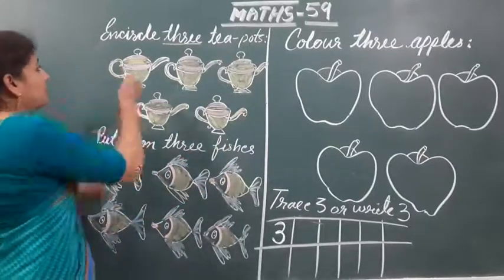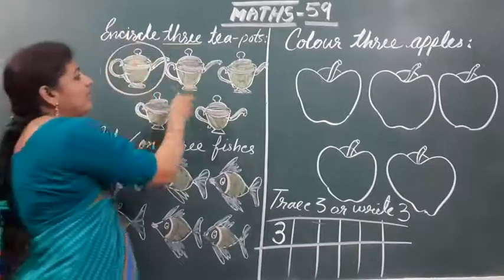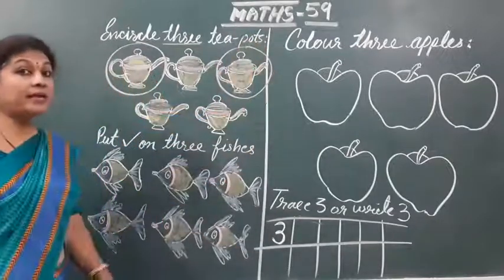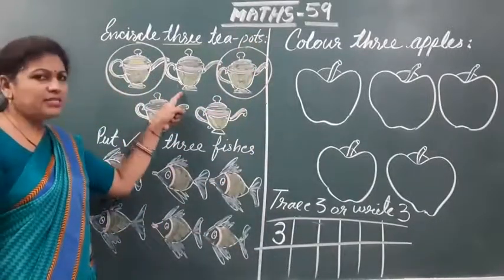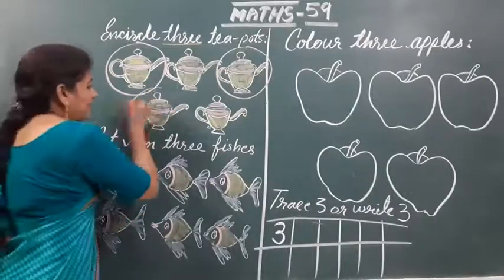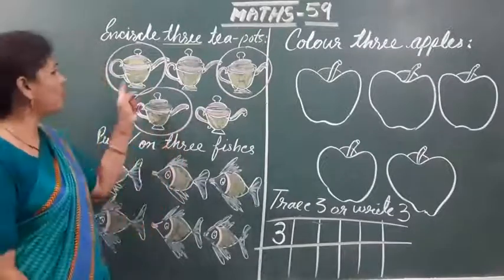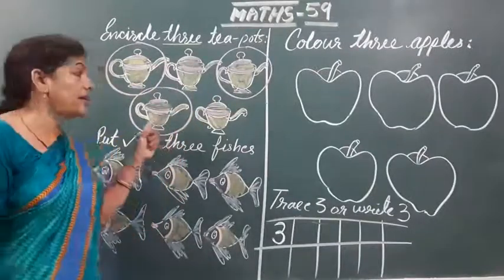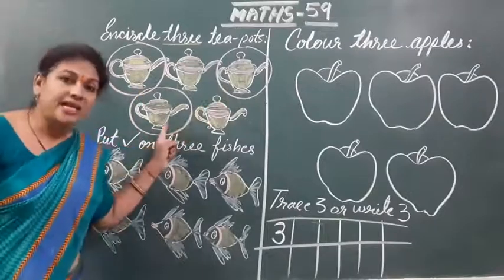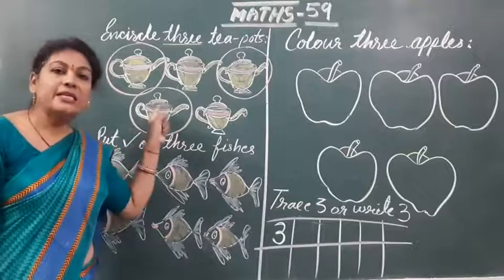First one — this one: 1. Then I am taking this one: 2. And which one? This one: 3. Any 3 you can take, no problem. कोई से भी 3 ले सकते हैं — 1, 2, 3. Any 3 teapots you can choose and encircle the teapots.